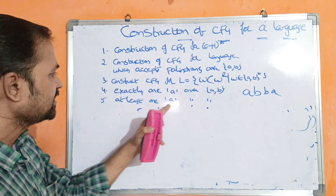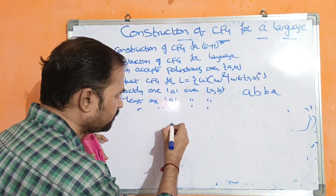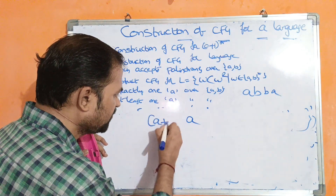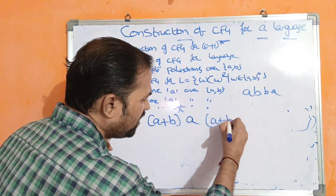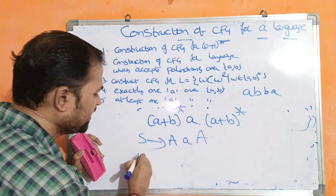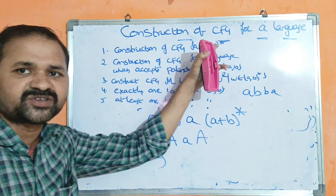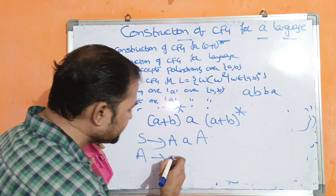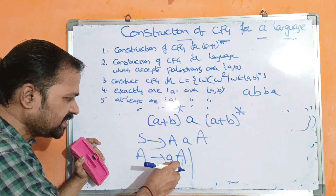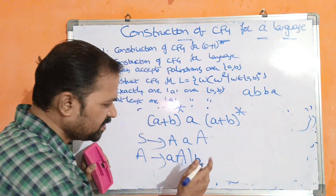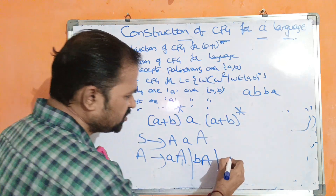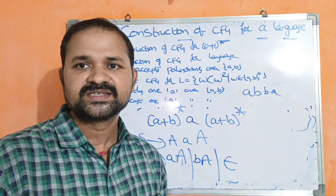Next: at least one 'a', over alphabet {a, b}. At least one a means minimum one a with no restriction on other a's and b's. Before and after this a we can have any number of a's and b's. Let A represent (a+b)*. Productions: S implies AaA. A implies aA | bA | epsilon. This is similar to the (0+1)* construction. In this way we can construct CFG for these languages.